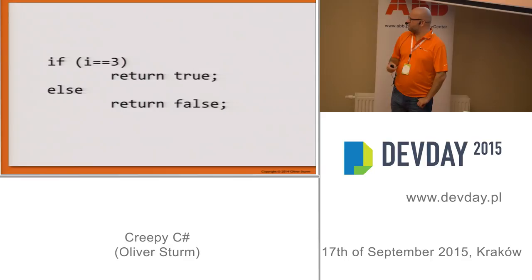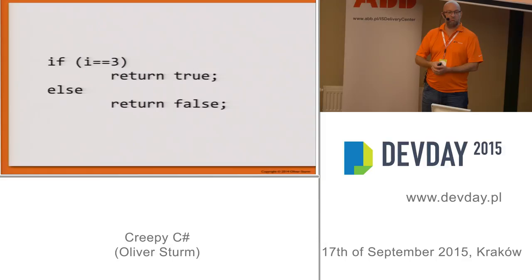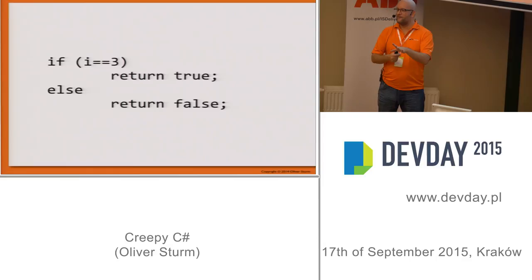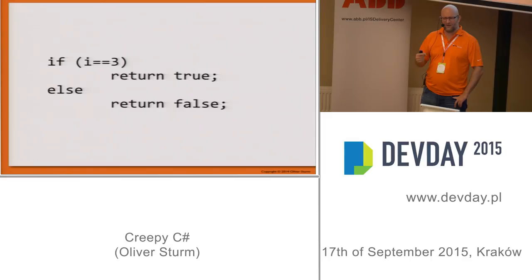I've read somewhere that statistically programmers write only 35 lines of code in a day. I don't know if it's true or outdated, but I don't think a programmer's efforts should be judged by line count. At the same time, if you're quite productive during a normal day, you should end up writing more than 35 lines. Doesn't sound like a lot either way.